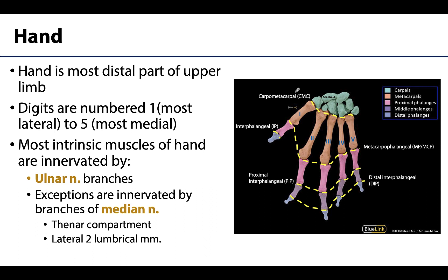The digits are numbered for ease of discussion — they're going to be numbered one through five from lateral to medial. You always have to think of the hand in anatomical position. So the thumb is going to be numbered one, then we go two, three, four, and then the little finger is five. This would be lateral and this would be medial in anatomical position.